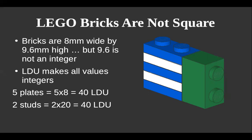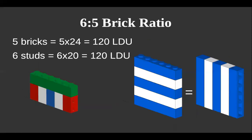The height of five plates is the same as the width of a two-stud brick — that's 40 LDU. That's why a lot of SNOT techniques require everything to be an even number of studs. Another useful ratio is the 6-to-5 ratio: a 1×6×5 panel or brick is square, and a stack of five bricks is equivalent to six studs — 120 LDU.